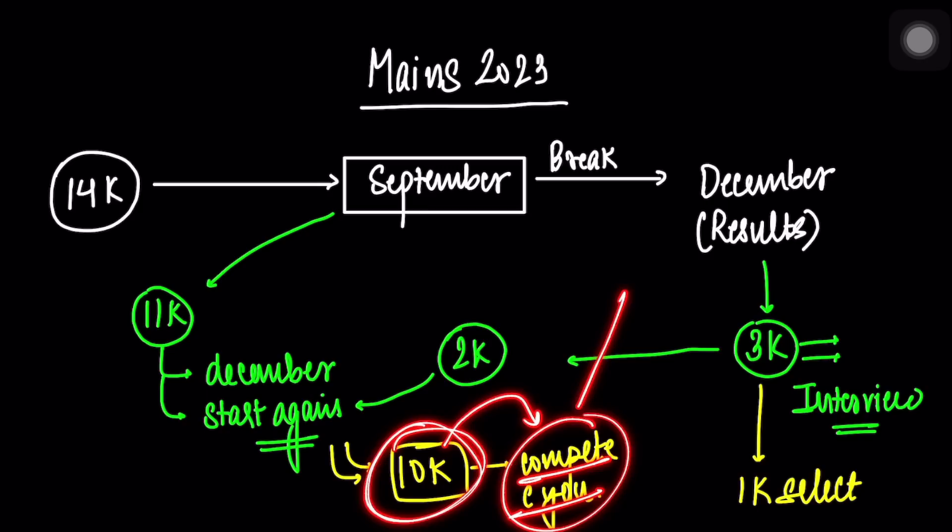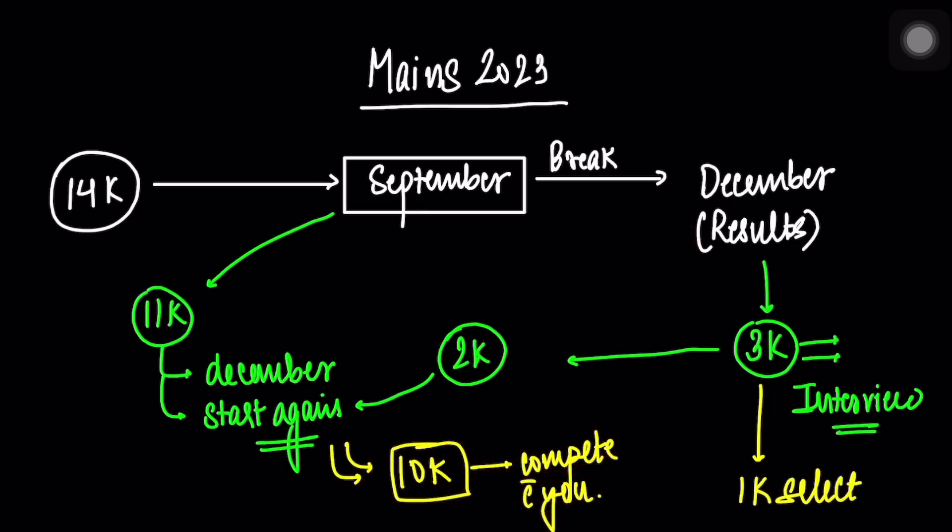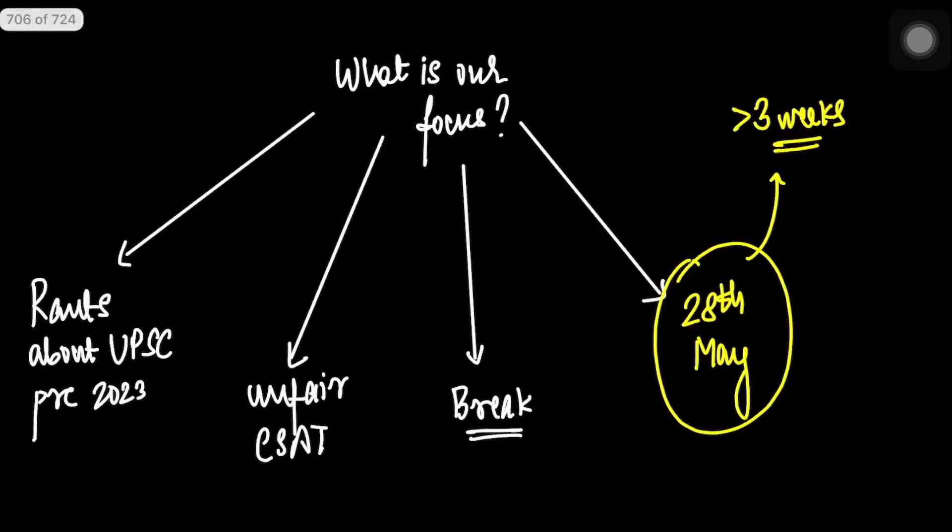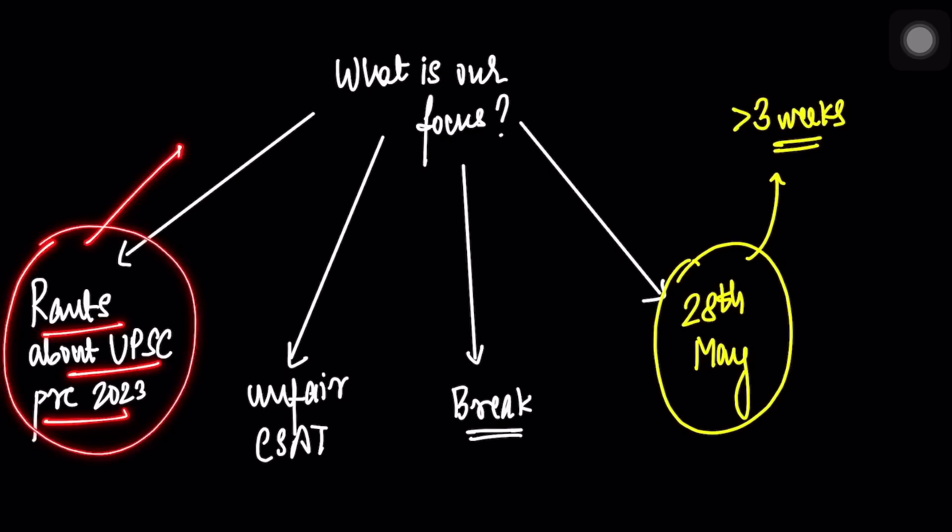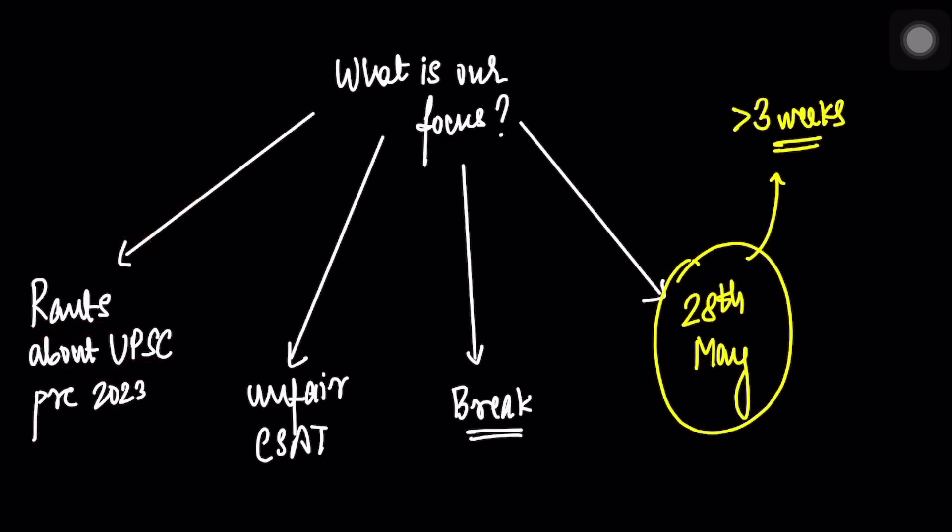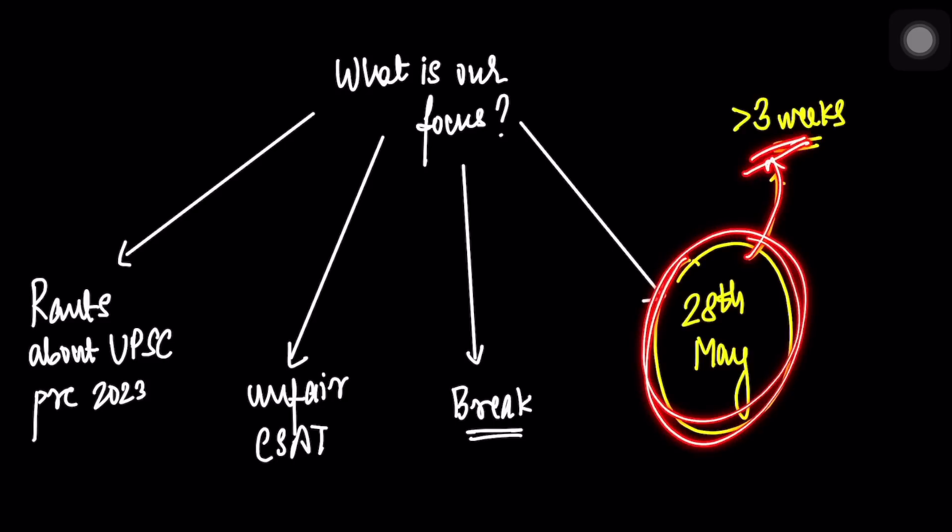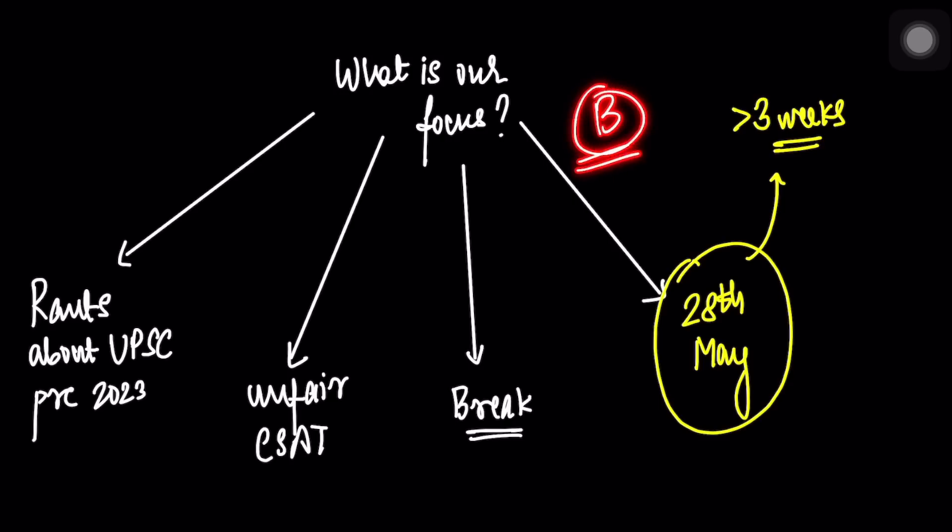These 13,000 people - some in December, some maybe third time after that - will start again, and approximately 10,000 will compete with you next year in 2024. But right now we are focused on prelims. Let's rant about UPSC Prelims 2023 - it was a very bad paper, difficult paper. CSAT was unfair to many engineers. CSAT is very, very unfair. You need a maths background. Let's take a break, relax. Now next year's paper is coming - it doesn't matter, right?